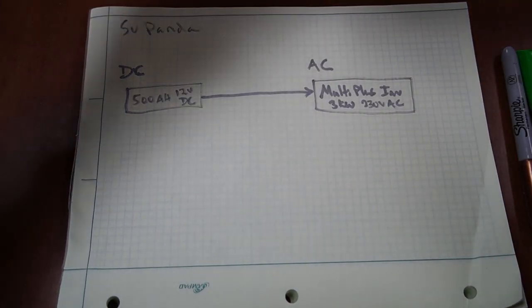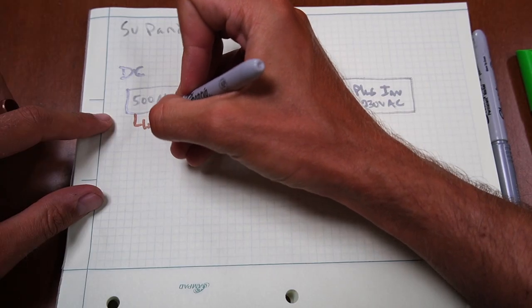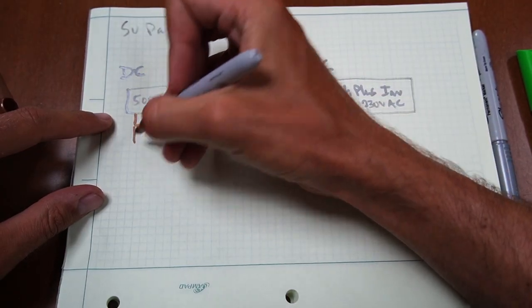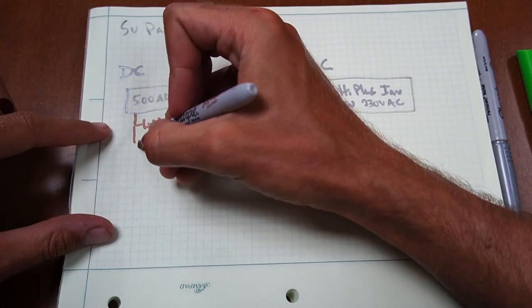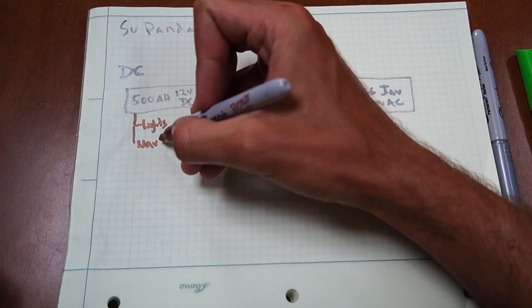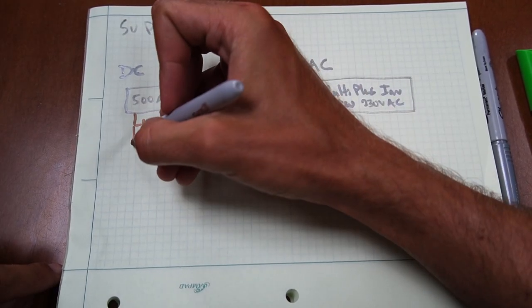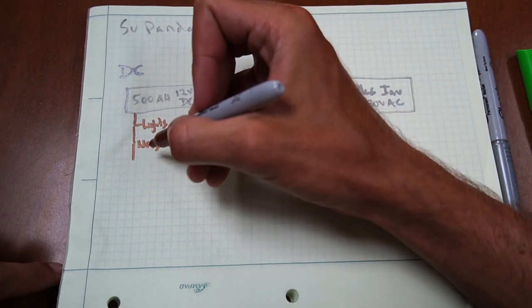Now we'll talk about all the draws that we have on our system. One obviously is small things like lights. We have other draws like our navigation system and our autopilot.